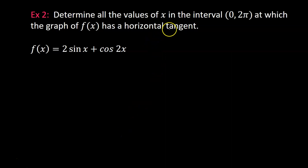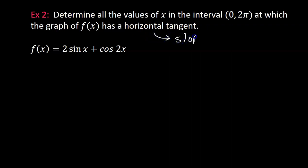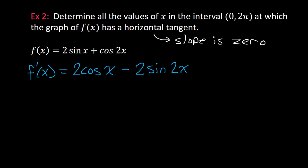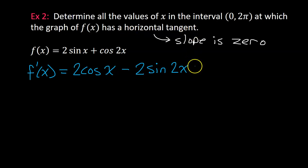Example 2: determine all values of x in the open interval 0 to 2pi at which the graph of f of x has a horizontal tangent line. A horizontal tangent line means the slope is 0. We're still using the same function from example 1, so we already found the derivative. The derivative tells us the slope at any point, and since we want slope equal to 0, we set the derivative equal to 0.